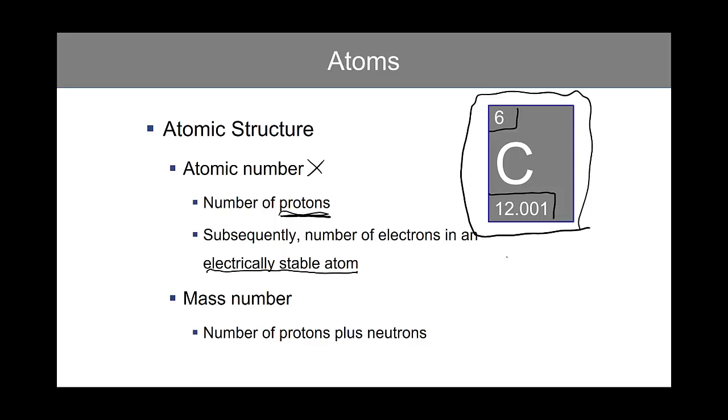So atoms of carbon that are electrically stable and non-isotopes would have six protons, six neutrons, and six electrons.